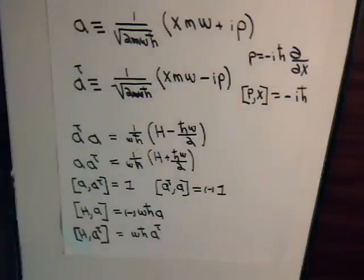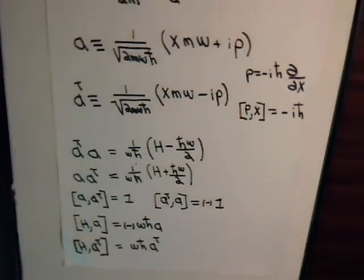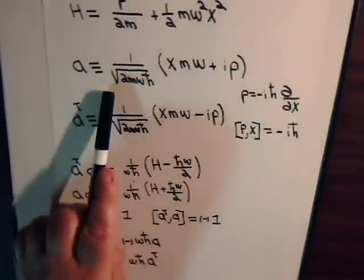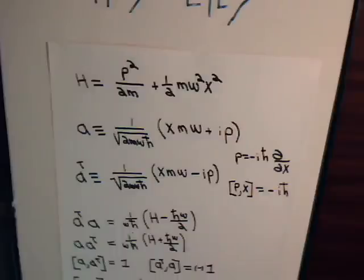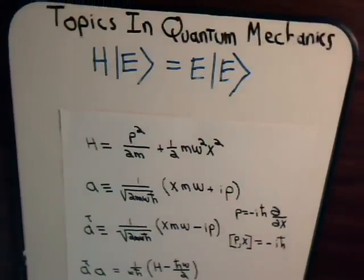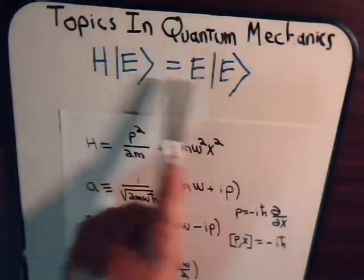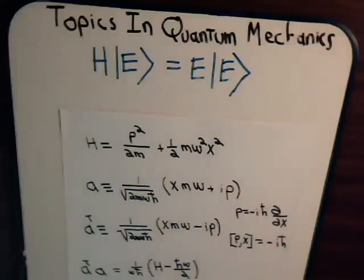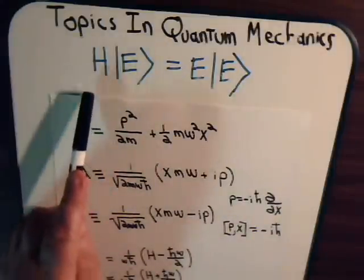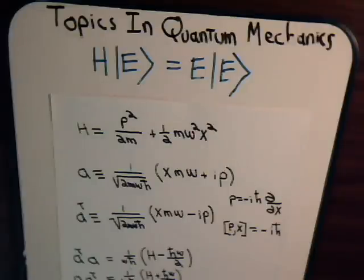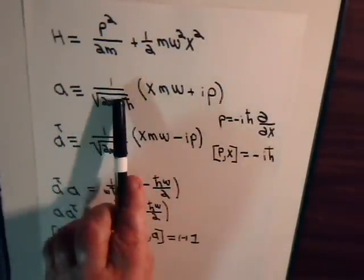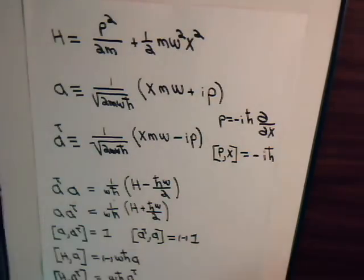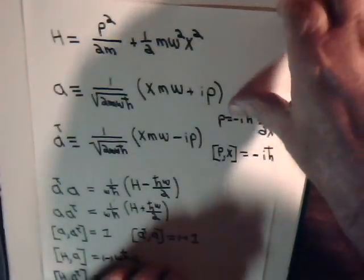In the last video, we considered what effect the operator A has on a one-dimensional quantum mechanical harmonic oscillator governed by the Schrödinger equation. What we discovered is that when A operates on both sides, it lowers the energy of the system. Now we want to consider what happens when, instead of using A, we use its complex conjugate, A†. So let's take a look at this.